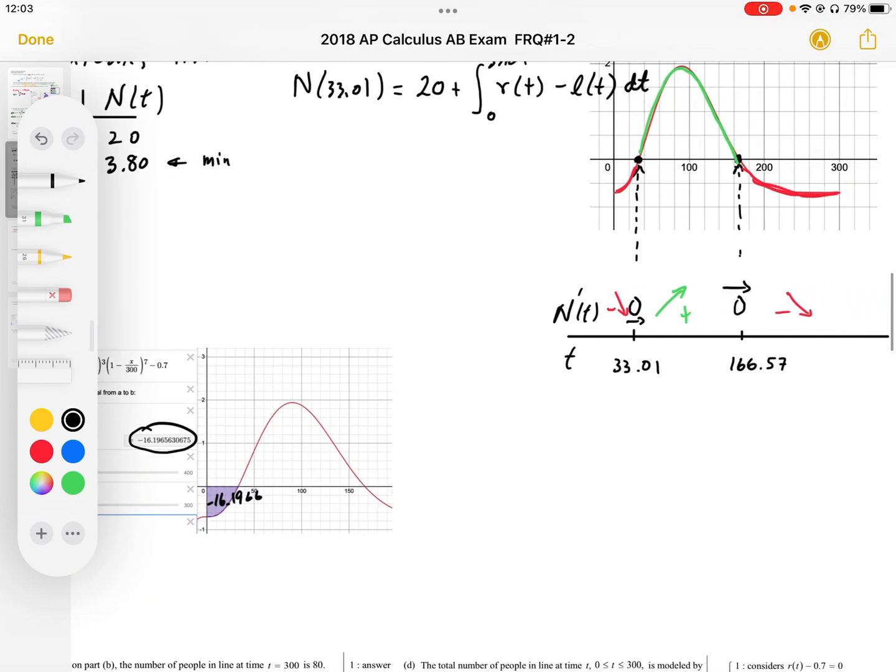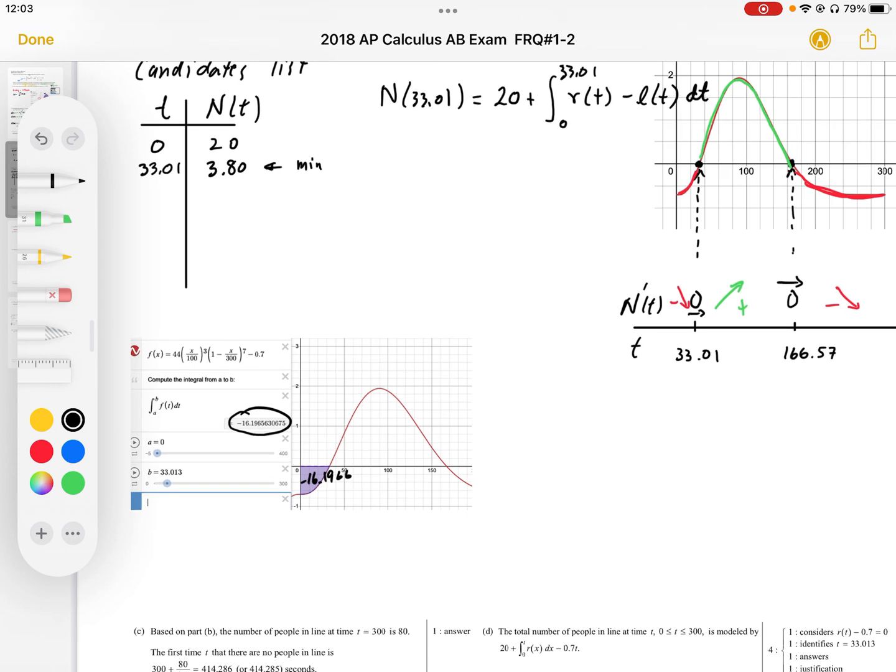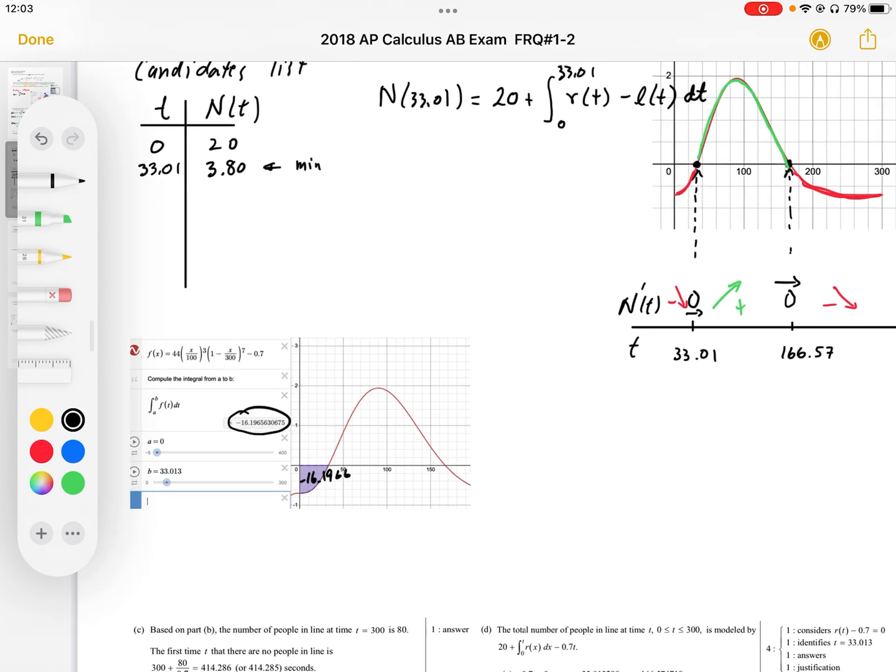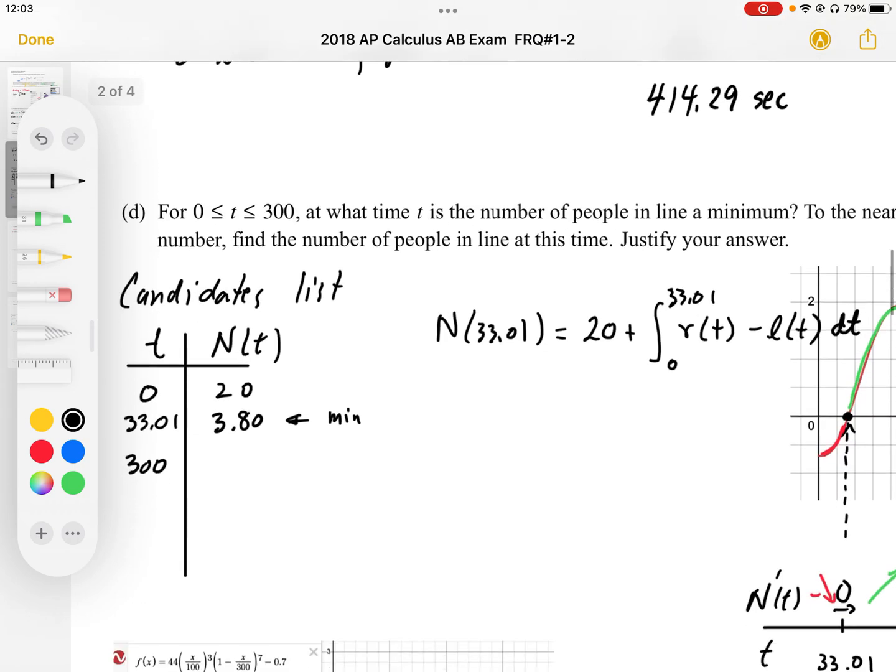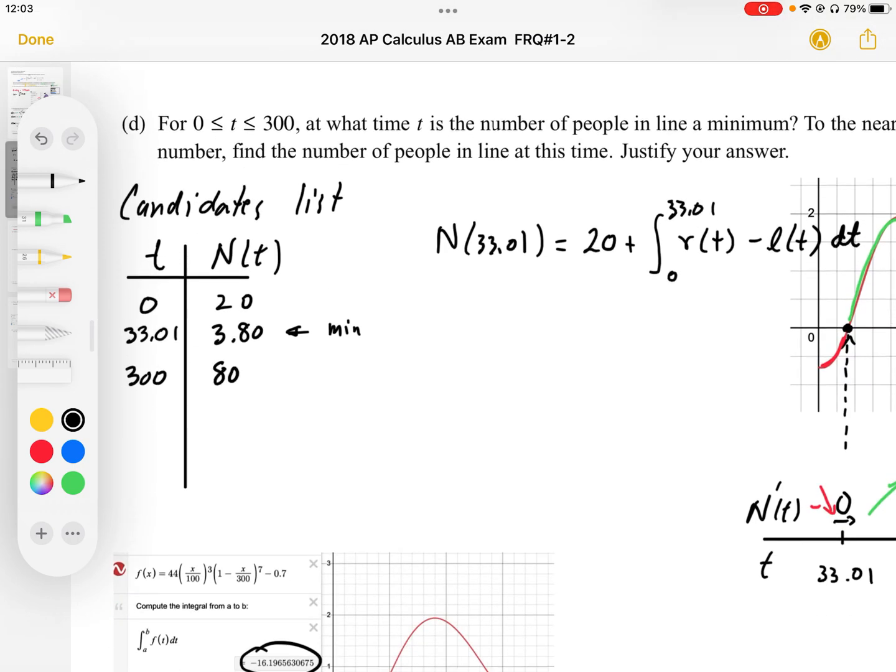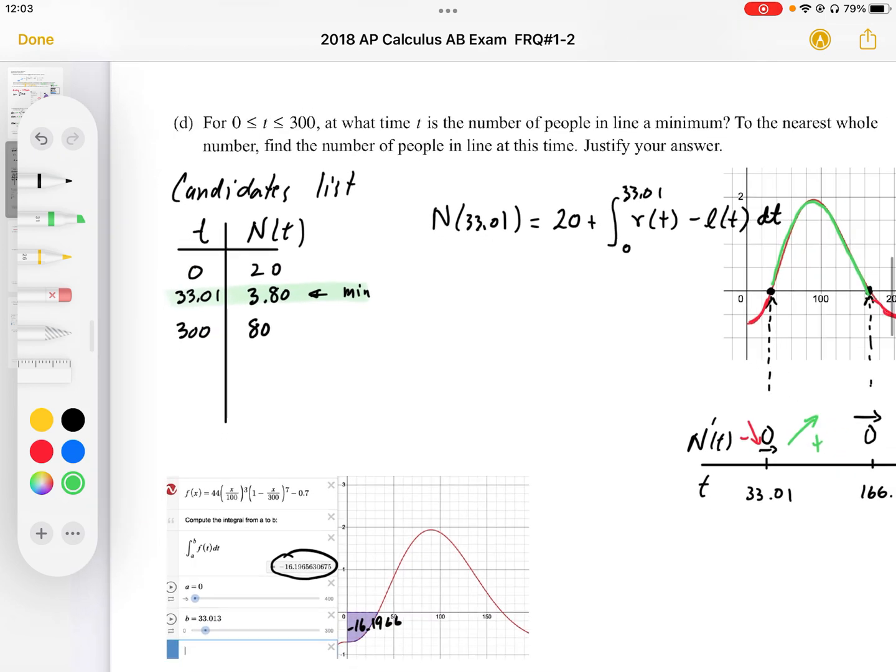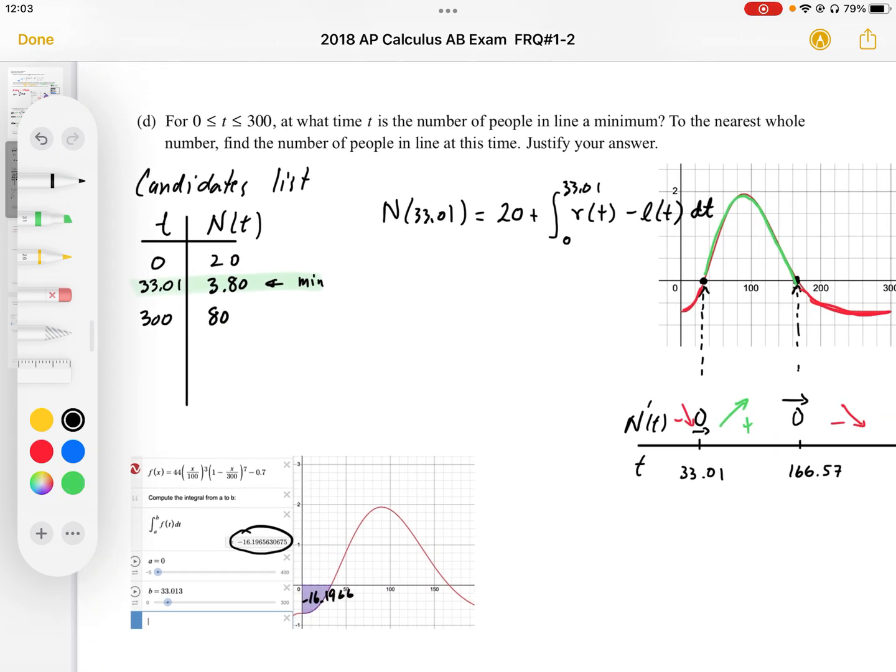We could always test our other point here, but that is a maximum point, so we really don't need that as our candidate. And then we should test our endpoint of 300. We worked out 300 up here. n of 300 is 80 people, so that is not the minimum. So the minimum occurs at 33.01 seconds, and we can justify this with our slope chart and a candidates list. So minimum is equal to 4 people.